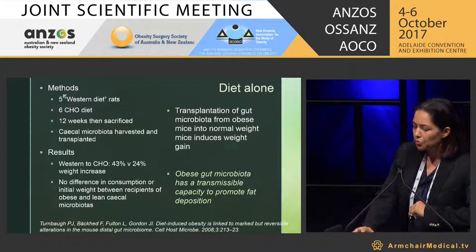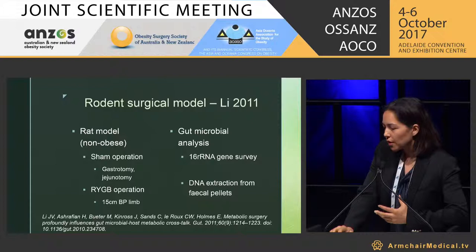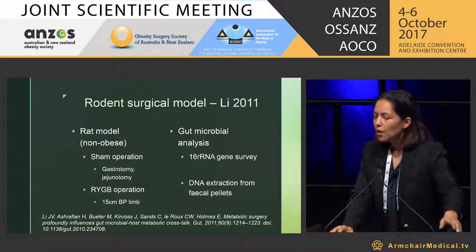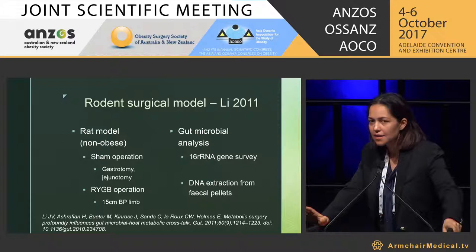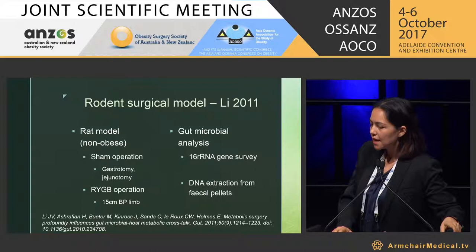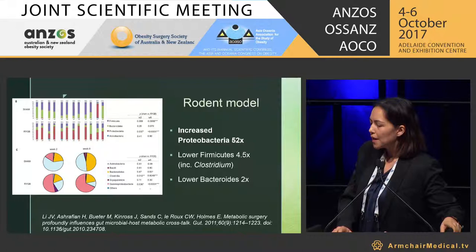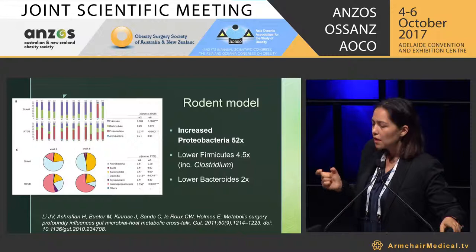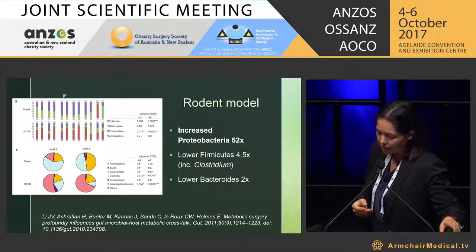What about with surgery? One of the earliest studies, by Lee and co-authored by Professor LaRue, was a rat model. In their sham model, they didn't just have no surgery — they indeed had a gastrotomy and a jejunostomy that was over-sewn. For the Roux-en-Y gastric bypass rodents, they used a standardised 15-centimetre BP limb. DNA extraction was done from faecal pellets. They found an increase in proteobacteria of 52-fold — and that proteobacteria includes E. coli, Salmonella, Vibrio, and Helicobacter.